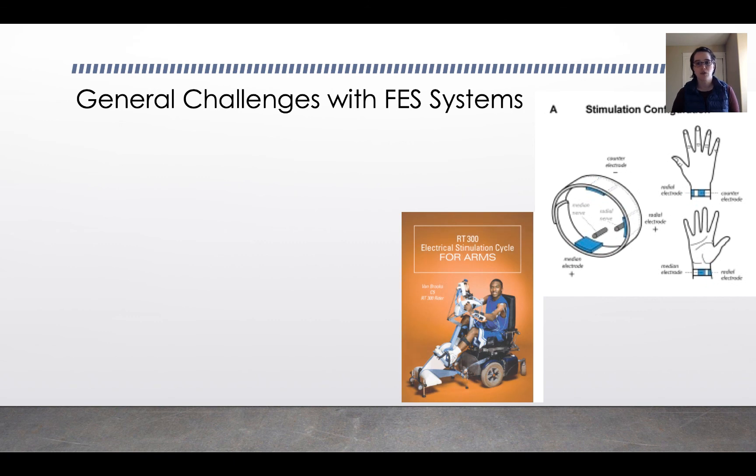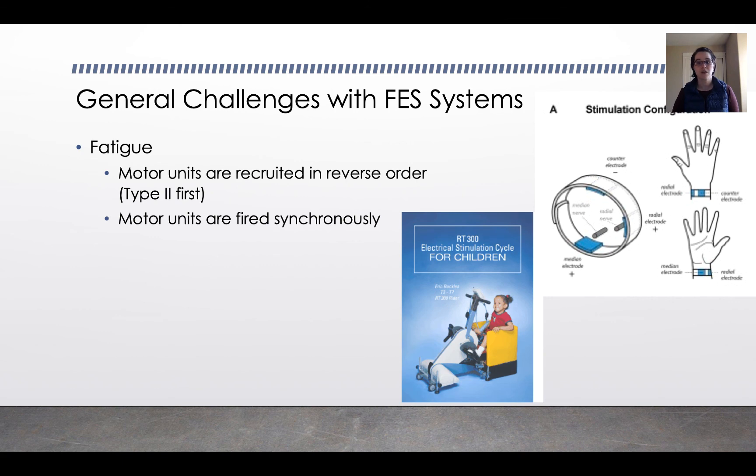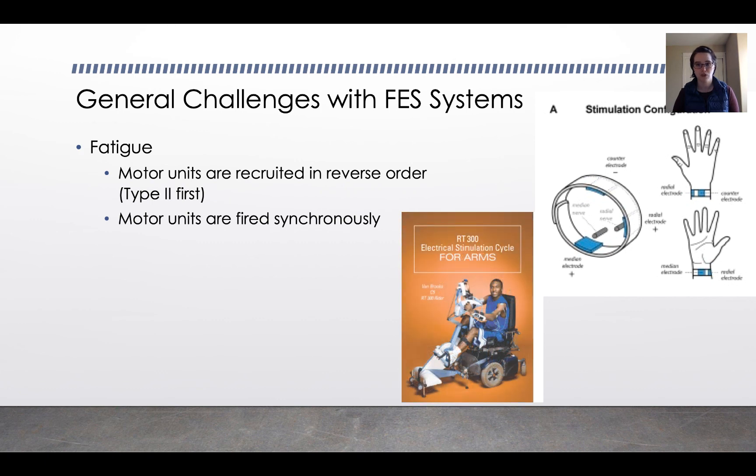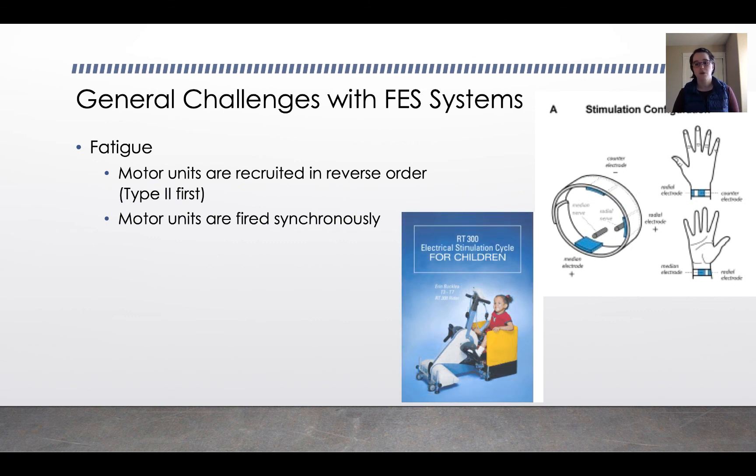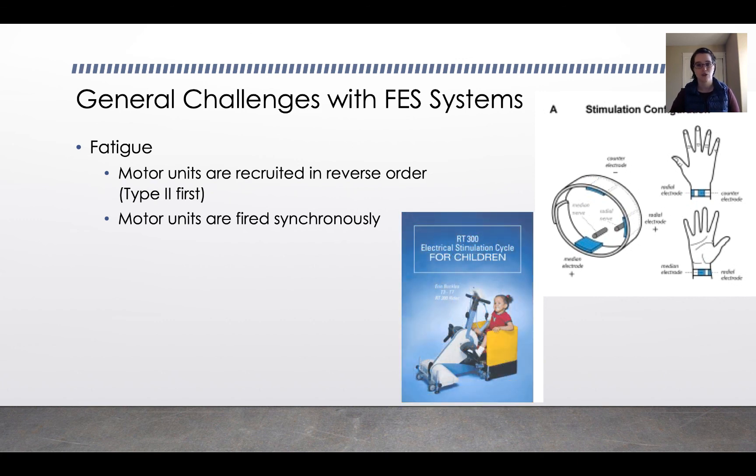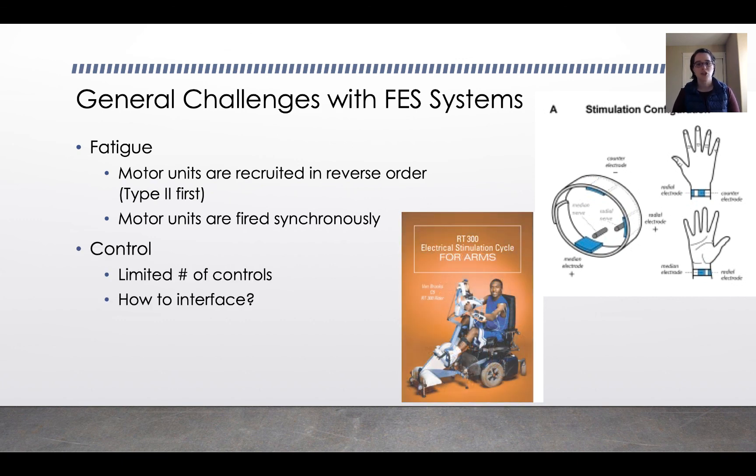So back to that functional electrical stimulation we were talking about earlier, there are some general challenges with functional electrical stimulation. One is fatigue. Typically, your muscles will recruit type 1 muscle units and then recruit type 2 muscle units. But functional electrical stimulation recruits in reverse order, so it recruits type 2 fibers first. And then the other problem with functional electrical stimulation from a fatigue point of view is that all of the motor units fire synchronously. So they all fire at the same time when they're stimulated. You're firing it so you get a really big force, but then you don't stagger it out to maintain that force, which is something that your typical neural stimulation pattern will do.